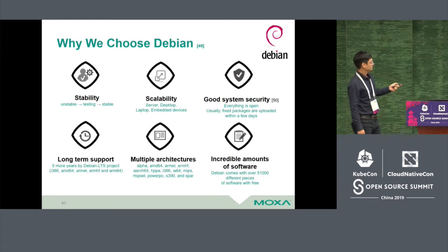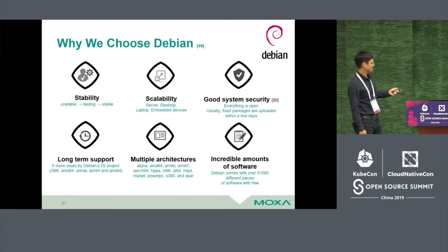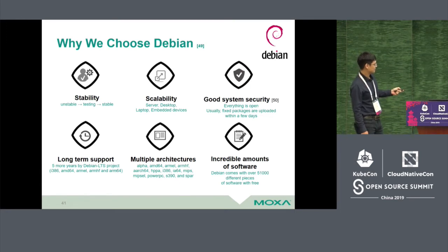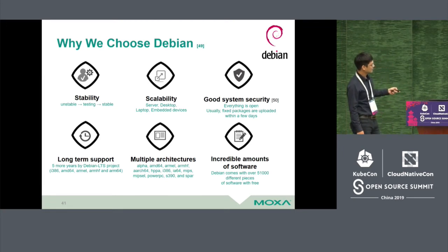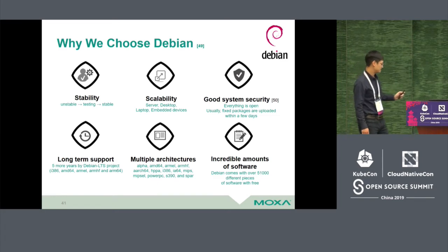We use Debian because of its stability — stable releases are truly stable. Scalability: from laptop to server to embedded devices. Boot system security: Debian has a security tracker. Long-term support: 5 years. Multiple architectures. And more than 50,000 packages available.